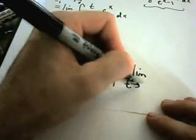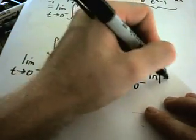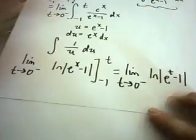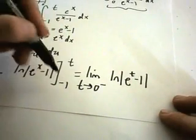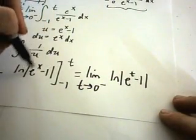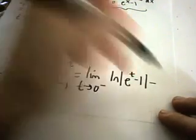I have the limit as t approaches 0 from the left. If I plug in t, I'll get ln of e to the t minus 1. Running out of room here. When I plug in negative 1, I'll get negative 1 minus 1 which is negative 2. I'll subtract off, but then I'll have the absolute value of that which will become ln of positive 2.